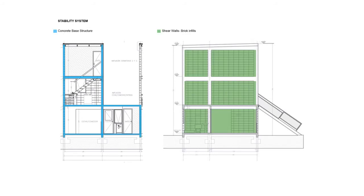In terms of the stability system, there is a concrete base structure carrying the main load of both the existing as well as the potential future extension of the house. This includes concrete floor slabs that span the structure together, and three walls built with concrete bricks that provide stability against strong winds and lateral forces.